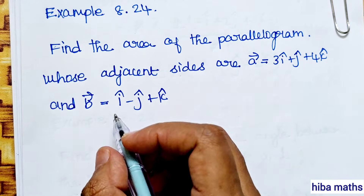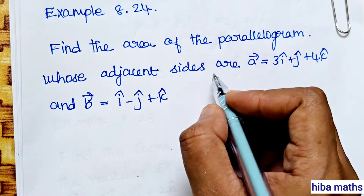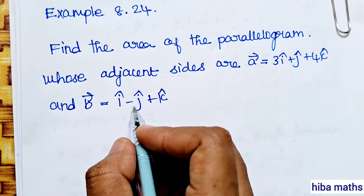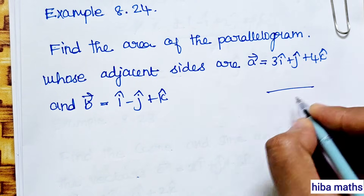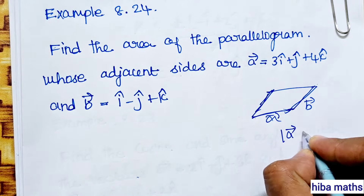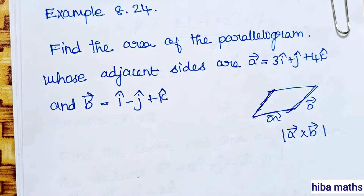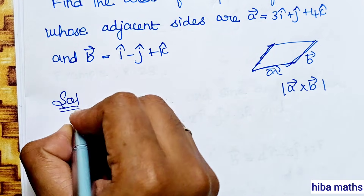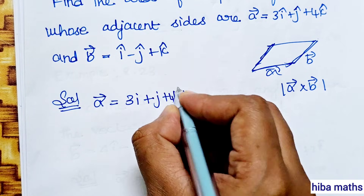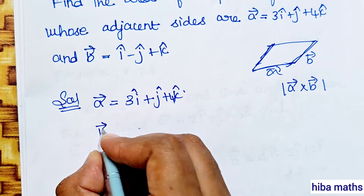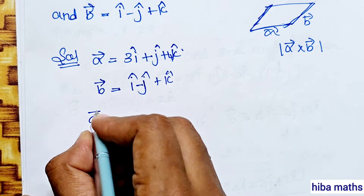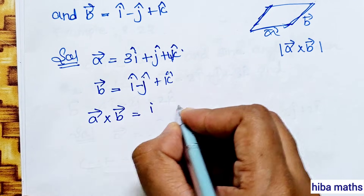Example 8.24. Find the area of the parallelogram whose adjacent sides are a vector equal to 3i plus j plus 4k and b vector equal to i minus j plus k. The area of a parallelogram is the modulus of a vector cross b vector. So first, we find a vector cross b vector.